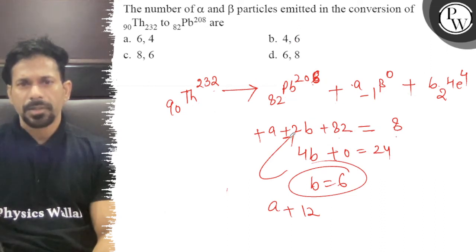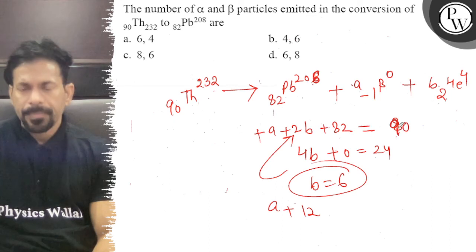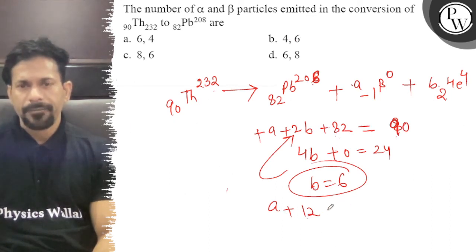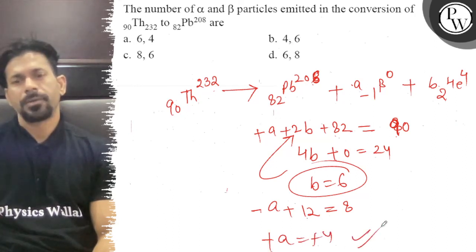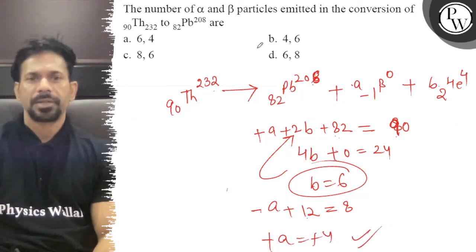All right, agar diya jaye to yeh 90 ayega na. So yeh ho gaya a plus 12 is equal to 8 minus. So minus of a is equal to minus of 4, so a barabar 4 ho jayega. So 4 and 6 are the correct answer.